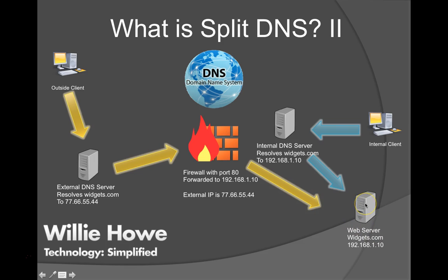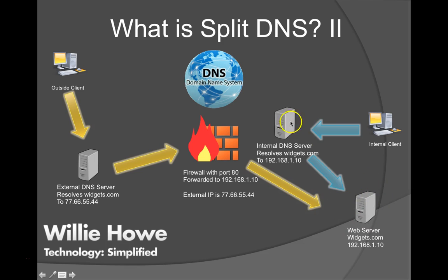Port 80 is forwarded from 77.66.55.44 over to 192.168.1.10, which is the widgets.com web server. When an internal client says 'I want to go to widgets.com,' it hits the internal DNS server, which says widgets.com is at 192.168.1.10, and sends the traffic directly there. It never touches the firewall, never has to loop back, and never has to leave the network.